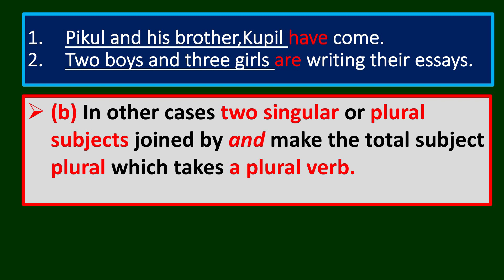Pekul and his brother Kupil have come. Two boys and three girls are writing their essays. Here two persons or groups are joined by 'and,' and the verb is plural — 'have,' not 'has.' When two singular nouns or two plural nouns are joined together by 'and' as separate entities, they take the plural verb form.